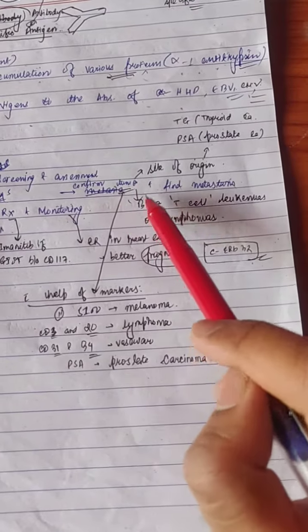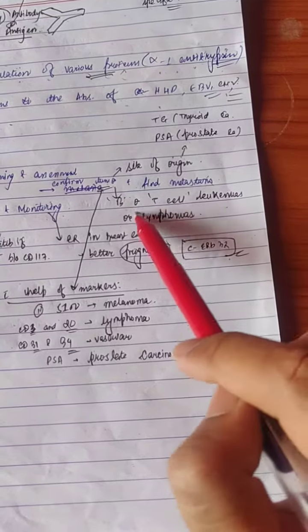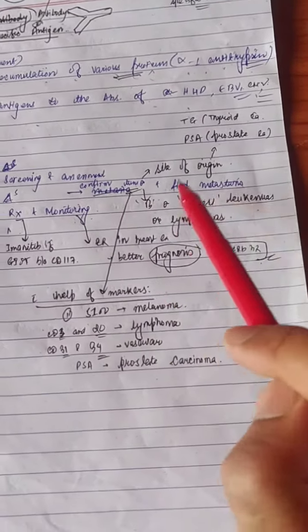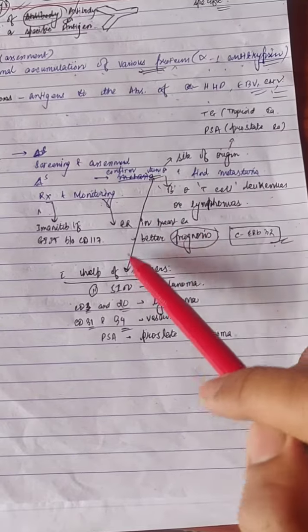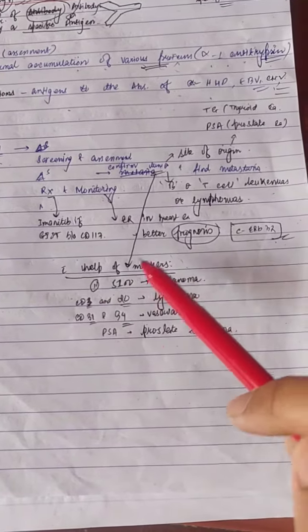T-cells and lymphomas are identified using tumor markers. Tumor markers are confirmed by tumor marker tests.